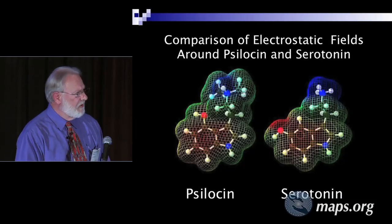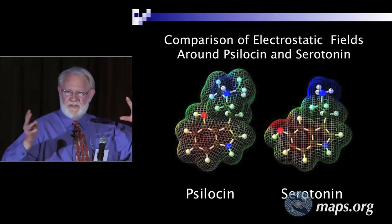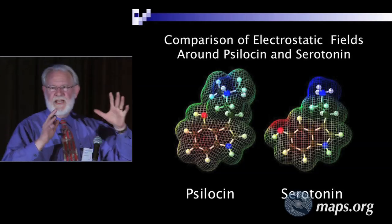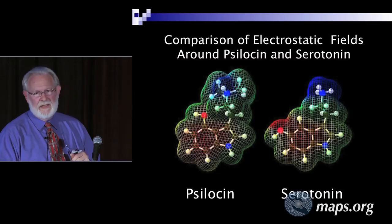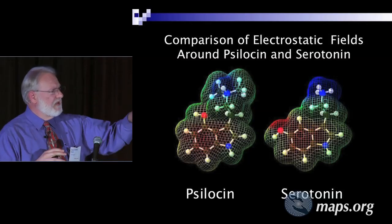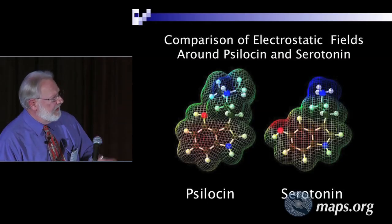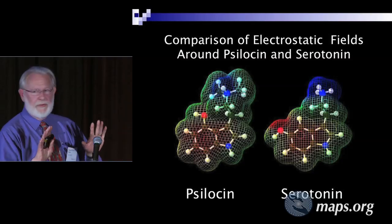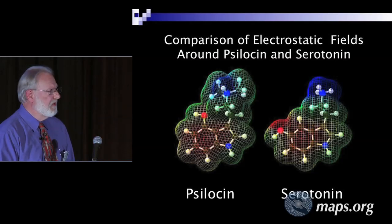These are molecules of serotonin and psilocin with their shape minimized using a computer. The grids represent the actual surface of the molecule, and I've plotted the electrostatic charges on top — positive charge is blue, negative charge is red. This shows there is a similarity between serotonin and psilocin, which is one of the tryptamines.